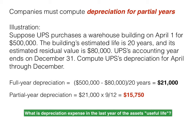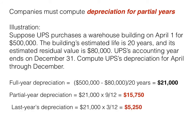What would the depreciation be in the last year of the asset's useful life? Well, since we bought it on April 1st of the first year, in the last year of its life it would only be depreciated for January, February, and March — three months. Assets are oftentimes usable after we've fully depreciated them. So we take the full year's depreciation of $21,000 and multiply that times three-twelfths, since $21,000 is for a full 12 months. In that last year we would have $5,250 in depreciation expense.